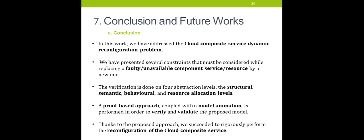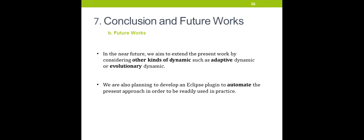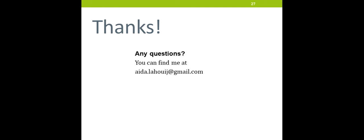Now we conclude and give insights into our future works. In this work we have addressed the cloud composite service dynamic reconfiguration problem. We have presented several constraints that must be considered while replacing a faulty or unavailable component service or resource. The verification is done on four abstraction levels: the structural, semantic, behavioral, and resource allocation levels. A proof-based approach coupled with model animation is performant to verify and validate the proposed model. In the near future, we aim to extend the present work by considering other kinds of dynamics such as adaptive or evolutionary dynamics. We are also planning to develop an Eclipse plugin to automate the present approach in order to be readily used in practice. Thank you for your attention. For any questions, you can find me at aida.laknish@gmail.com.